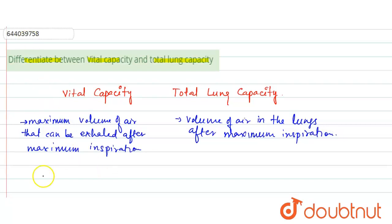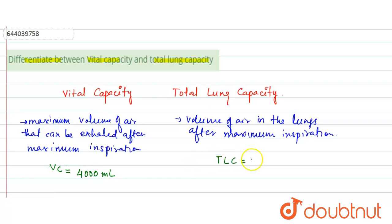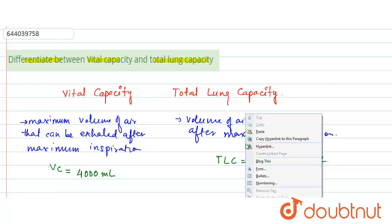Mathematically, vital capacity (VC) is approximately equal to 4000 ml, and TLC is approximately equal to 5000 to 6000 ml in human beings. TLC includes IC, ERV and residual volume, whereas VC (vital capacity) includes IC (inspiratory capacity) and ERV.